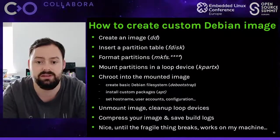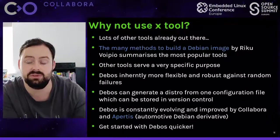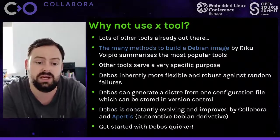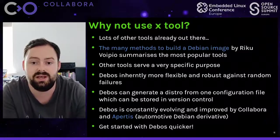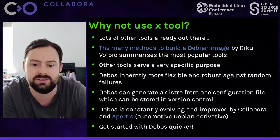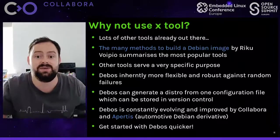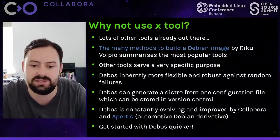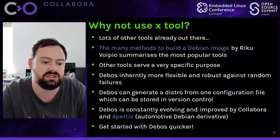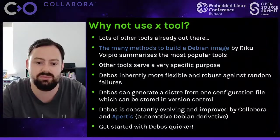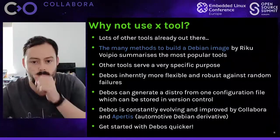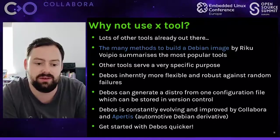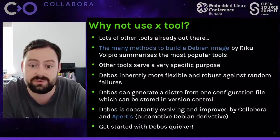There are lots of tools out there that do this - for instance, spindle for Raspberry Pi. There's a presentation called 'The Many Methods to Build a Debian Image' which covers lots of tools. DevOS isn't on the list yet. The conclusion of that presentation is that these other tools serve very specific purposes and aren't quite generic enough. Debian OS was designed to be inherently more flexible and robust against random failures like issues with kpartx and loop devices. DevOS generates a complete distro from one configuration file that can be stored in version control.